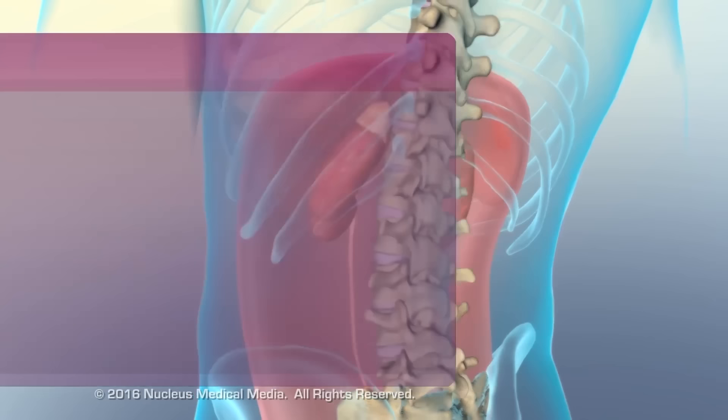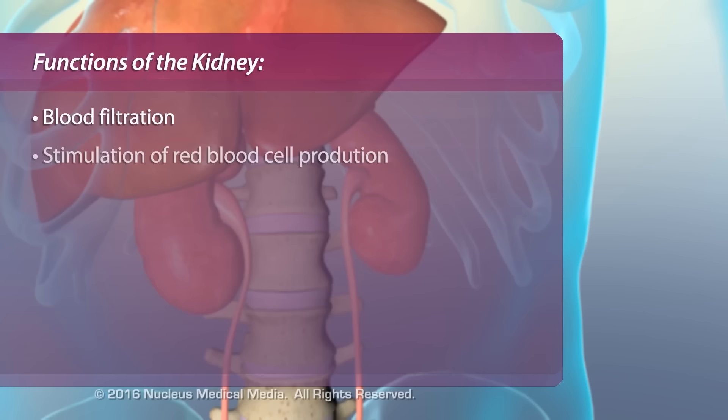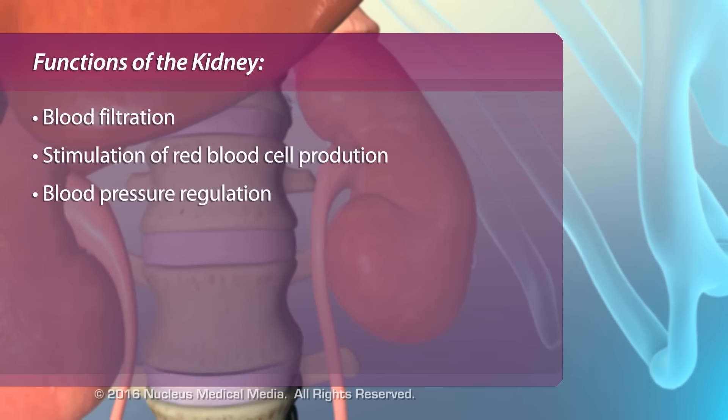The functions of each kidney include filtration of metabolic wastes, fluids, and electrolytes from the blood during urine production, stimulation of red blood cell production, and regulation of blood pressure.